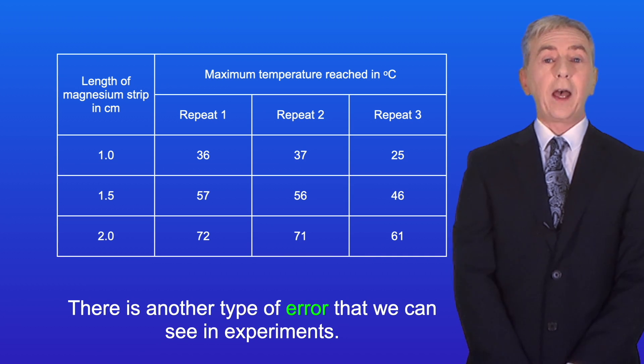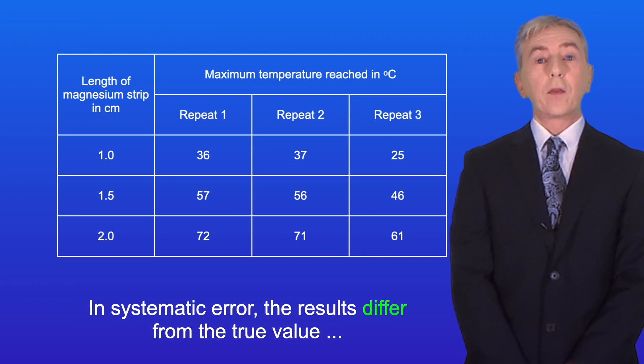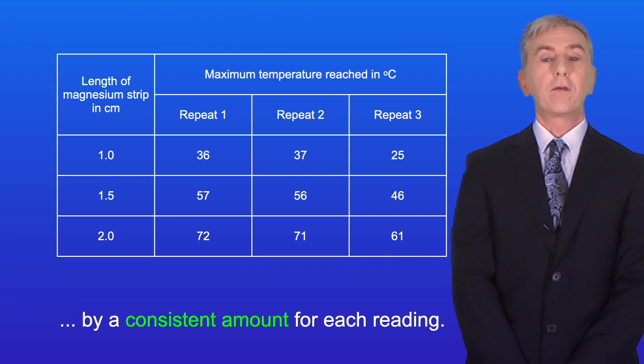Now there's another type of error that we can see in experiments. This is called systematic error. In systematic error the results differ from the true value by a consistent amount for each reading.